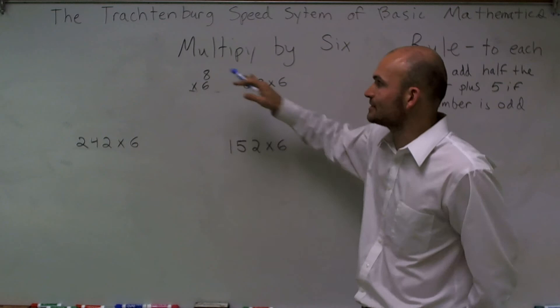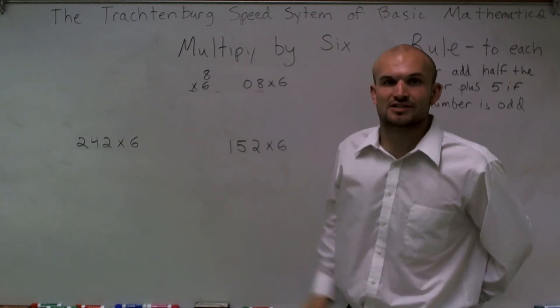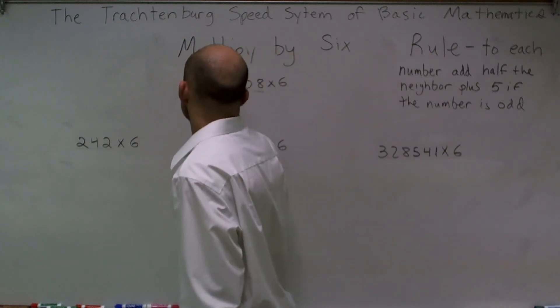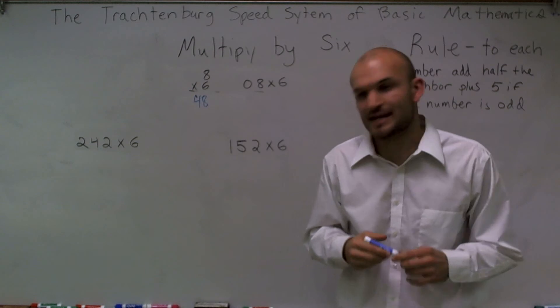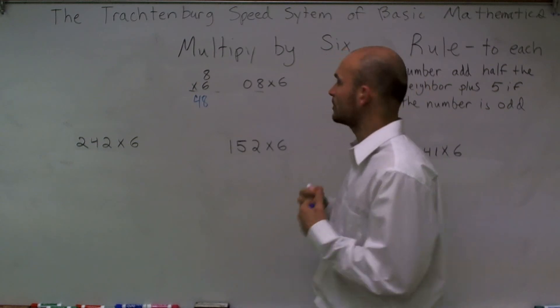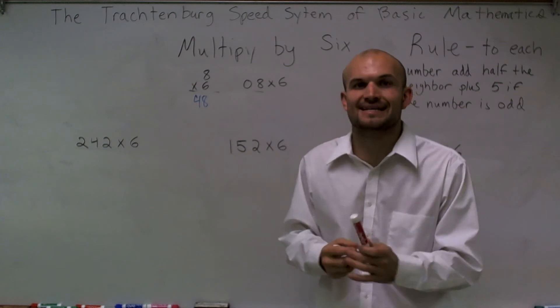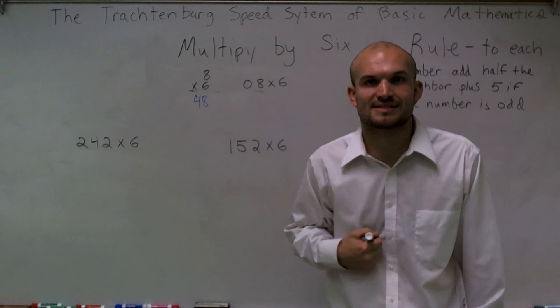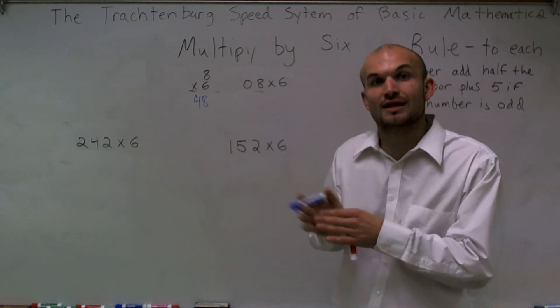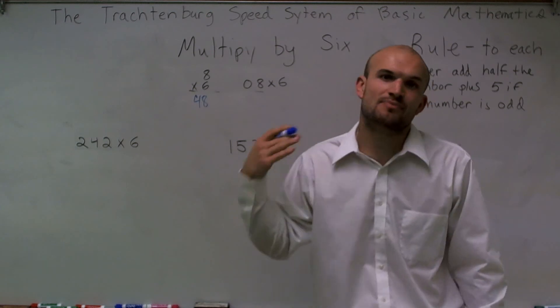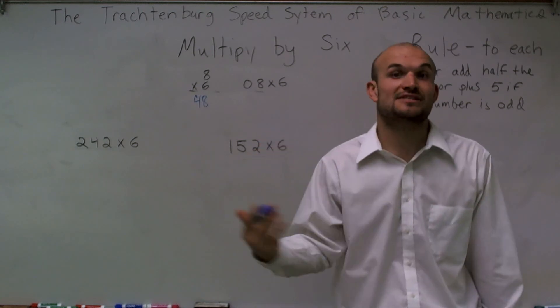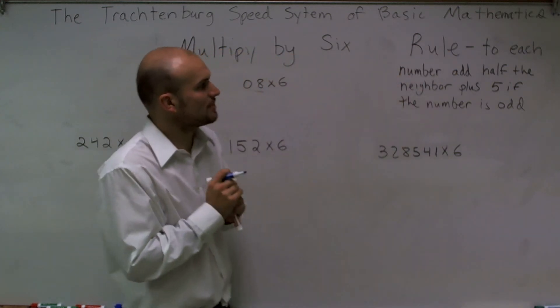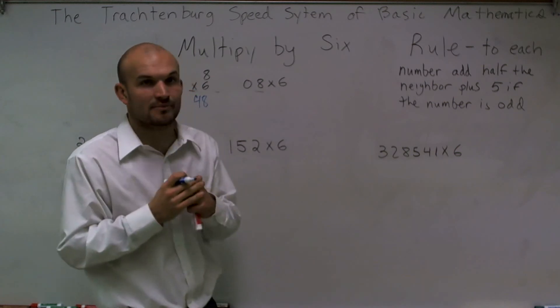The way the Trachtenberg system works is to eliminate us from remembering our times tables. If you remember, eight times eight, we generally learn that eight times eight was 64, and we would not know the answer unless we had that memorized. Well, the Trachtenberg system is designed to give us a set of rules that we can consistently use whenever we're multiplying by six. We can apply them to small and large numbers, and the more we use these rules, the faster and faster we'll get. Our rule tells us when multiplying by six: take each number, add half of the neighbor, plus five if the number was odd.